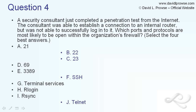Using the process of elimination for the rest: port 21 is FTP, and FTP is not listed as a protocol here. We also don't use FTP to log into a router — we use telnet or a terminal emulation program or SSH. Port 69 is TFTP, another file transfer protocol; we're not going to use that with an internal router. Port 3389 is RDP, remote desktop protocol — we use that to connect to other computers, but not a typical router.